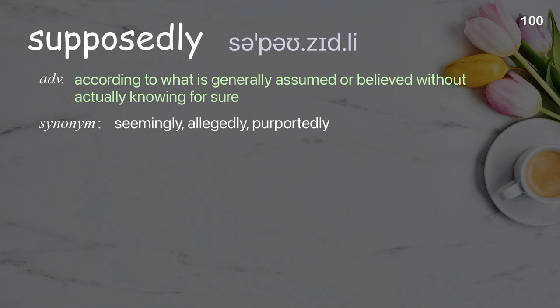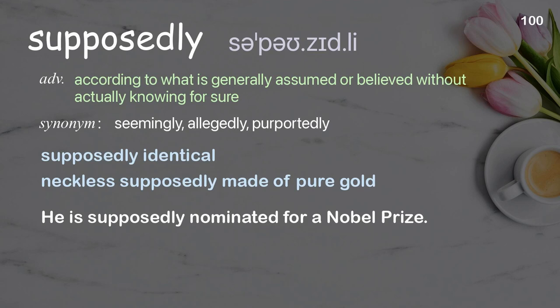Supposedly: According to what is generally assumed or believed without actually knowing for sure. Examples: Supposedly identical. Necklace supposedly made of pure gold. He is supposedly nominated for a Nobel Prize.